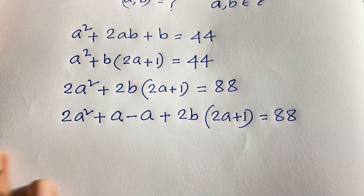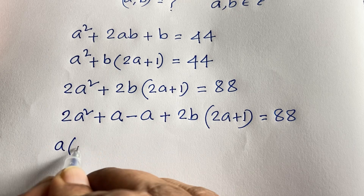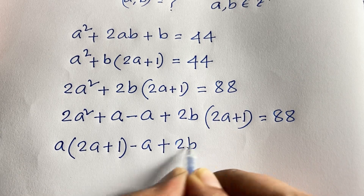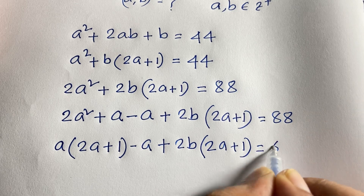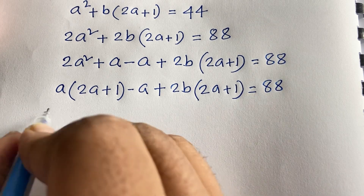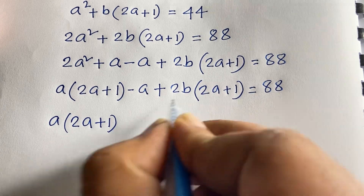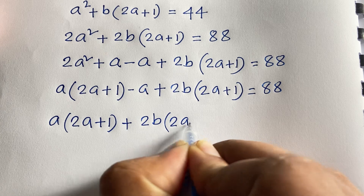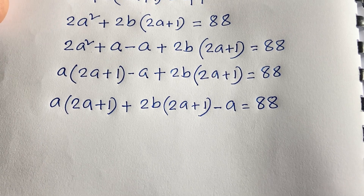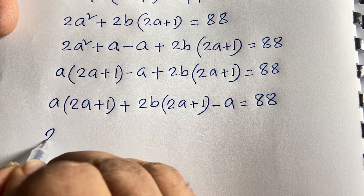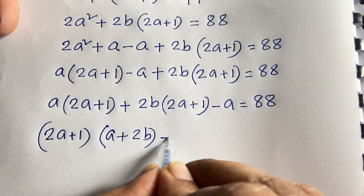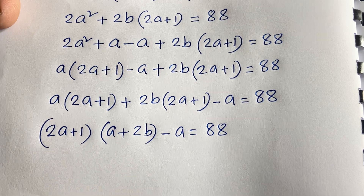Now I can see easily here a is common, so 2a squared divided by a gives 2a, and a divided by a gives 1. So: a(2a plus 1) minus a plus 2b(2a plus 1) equals 88. In this expression I can see (2a plus 1) is common, so: (2a plus 1) times (a plus 2b) minus a equals 88.